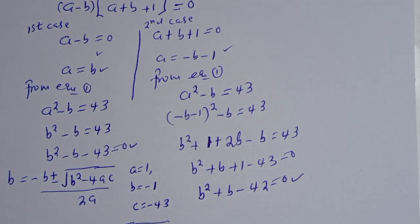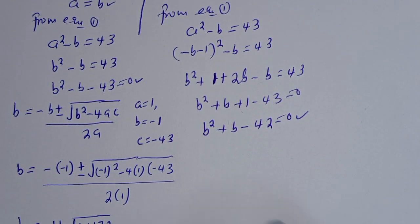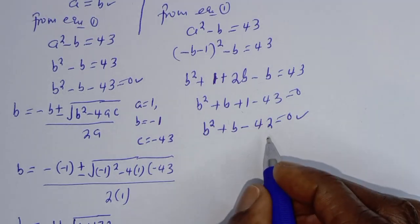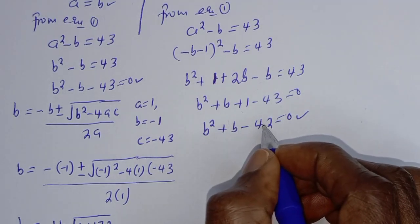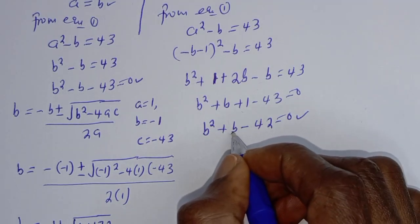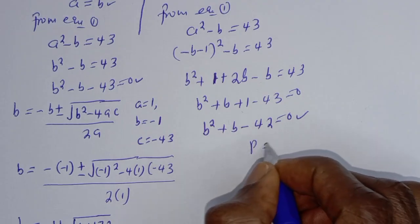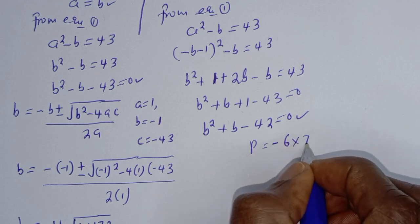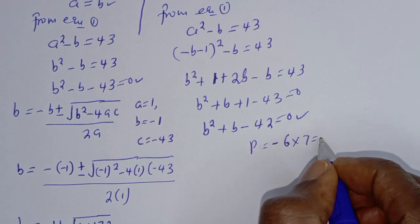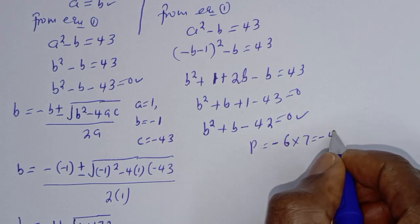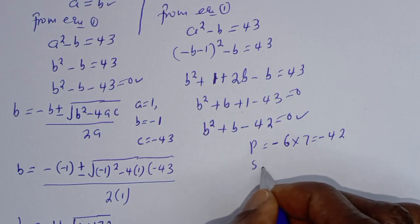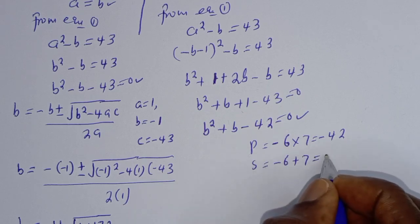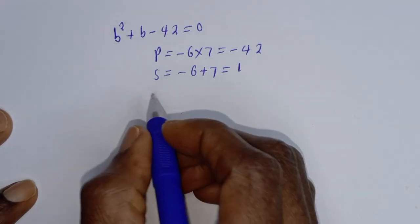This simplifies to B squared plus B minus 42 is equal to 0. This is a quadratic equation which can be solved by factorization. The product must equal minus 42 and the sum must equal 1. We find minus 6 times 7 equals minus 42, and minus 6 plus 7 equals 1.